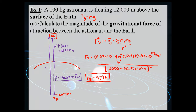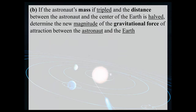Part B: if the astronaut's mass is tripled and the distance between the astronaut and the center of the Earth is halved, determine the new magnitude of the gravitational force between the astronaut and the Earth. We haven't dealt with a problem like this since the very start of the course when we looked at variations in equations — these types of questions will start appearing more frequently. We know that Fg equals G M1 M2 over R squared, equal to 978 newtons before the changes.